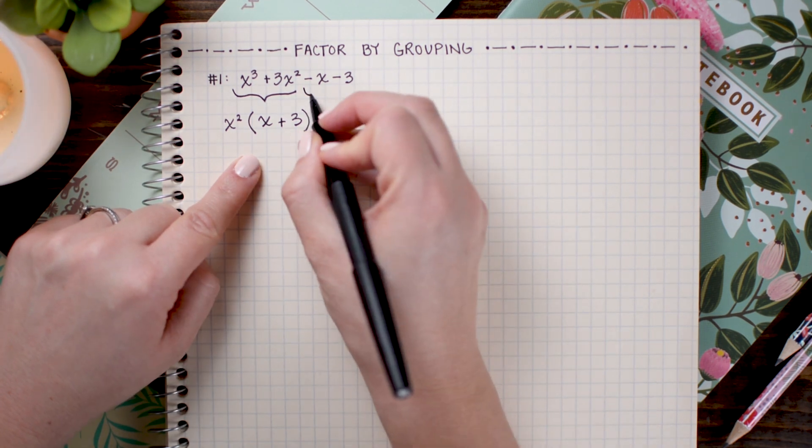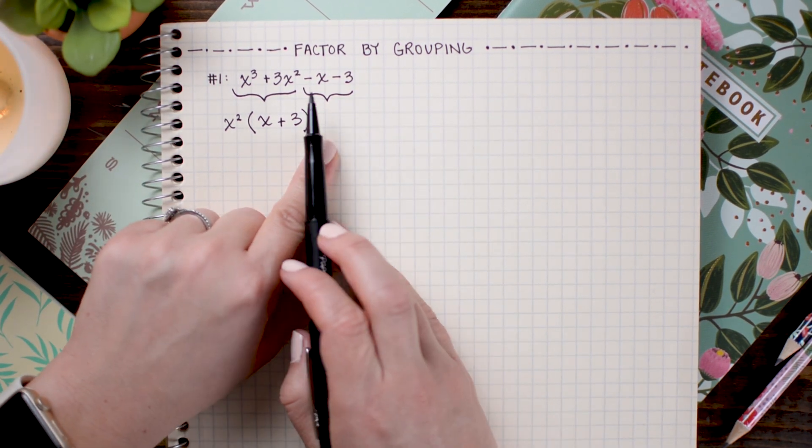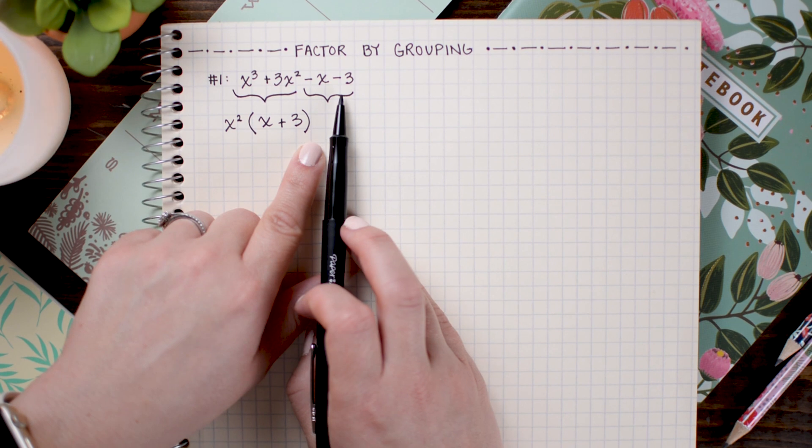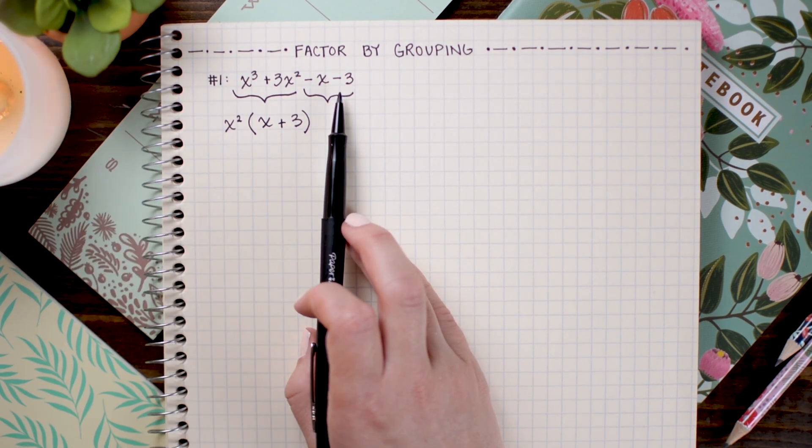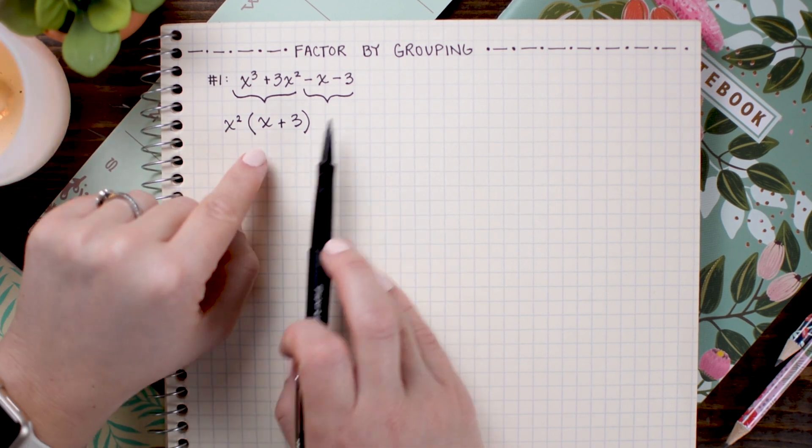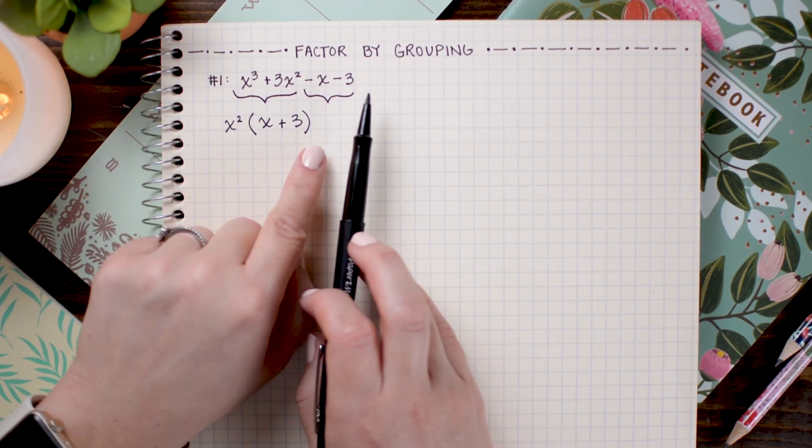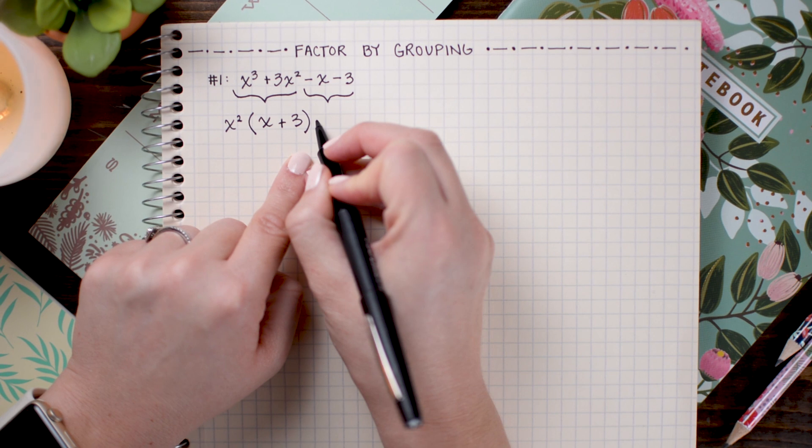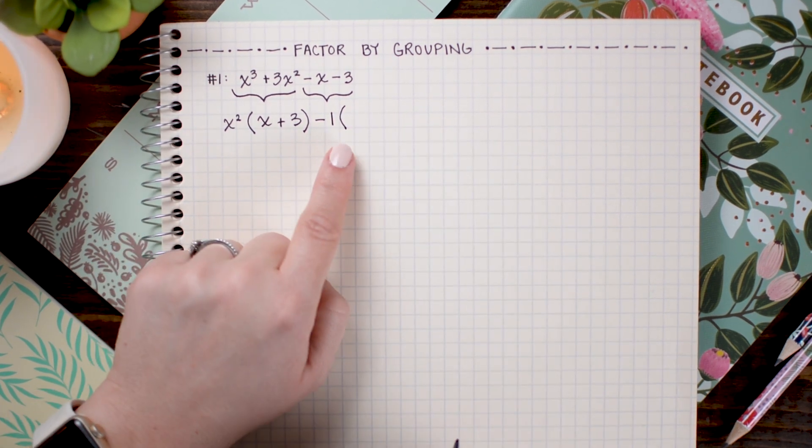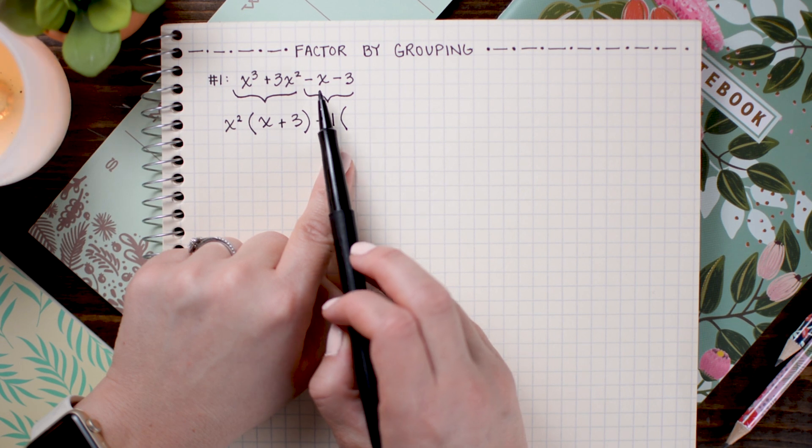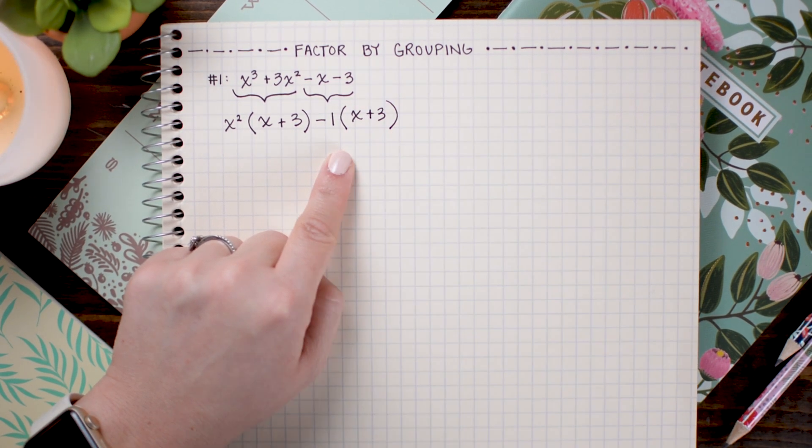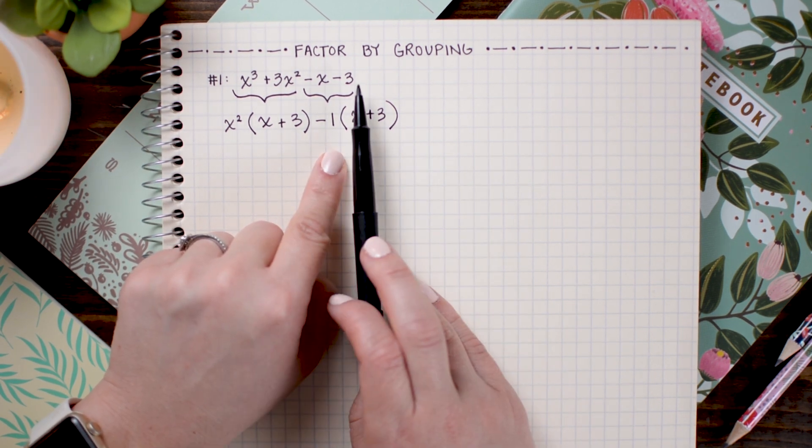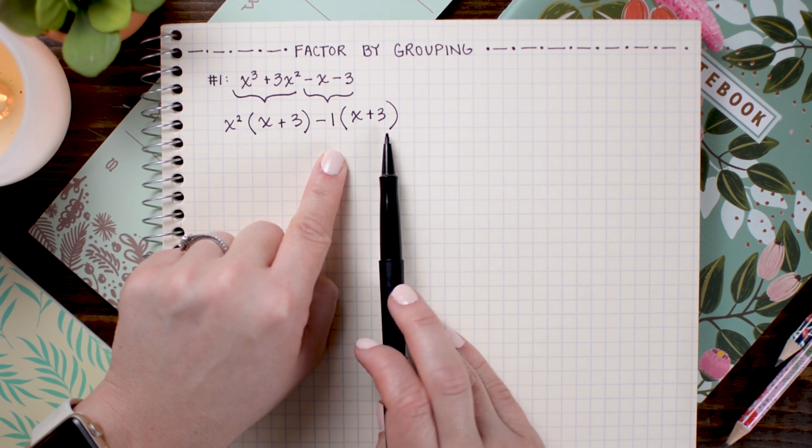Now, we want to do the same thing with the second set of two terms. Here, I have minus x minus 3. At first glance, it doesn't look like there's much of a greatest common factor here. And, if there isn't, you can always factor out a positive 1 as your greatest common factor. Now, I want an x plus 3 to be left behind when I factor out the GCF so that it will match this one. So, to do that, I'm going to choose to factor out a minus 1. And, what that will do is it will allow this to become x plus 3. If that confuses you, you can just think that if I divided negative x by negative 1, I would get positive x. If I divided negative 3 by negative 1, I would get positive 3.